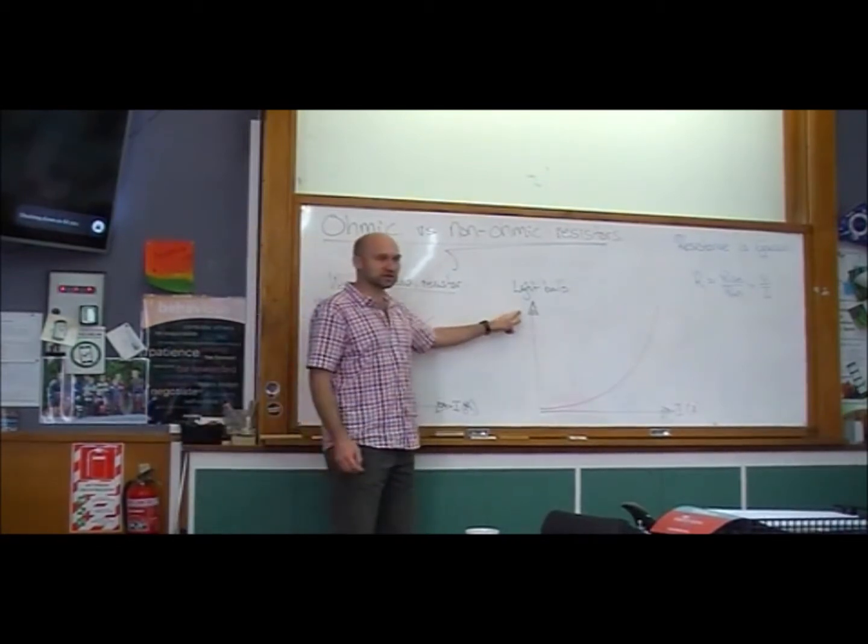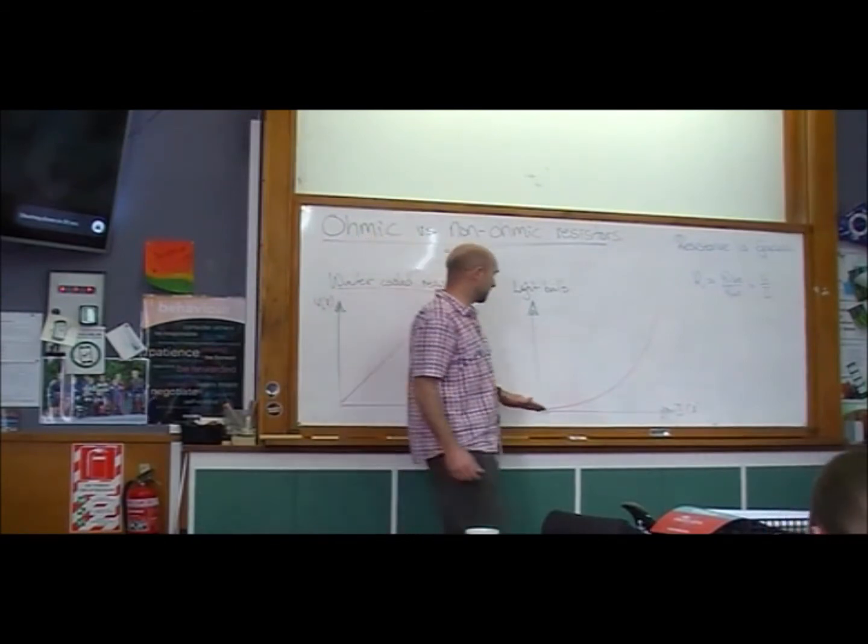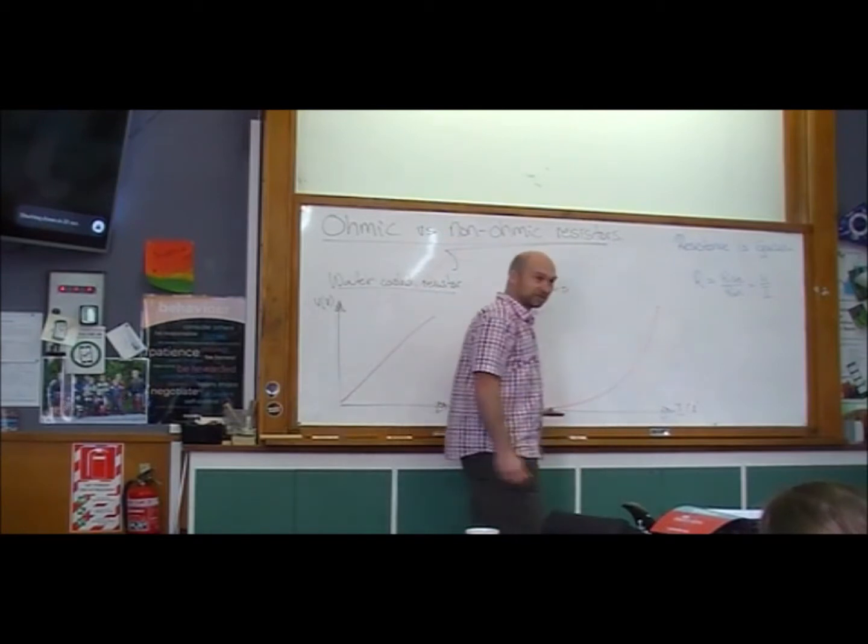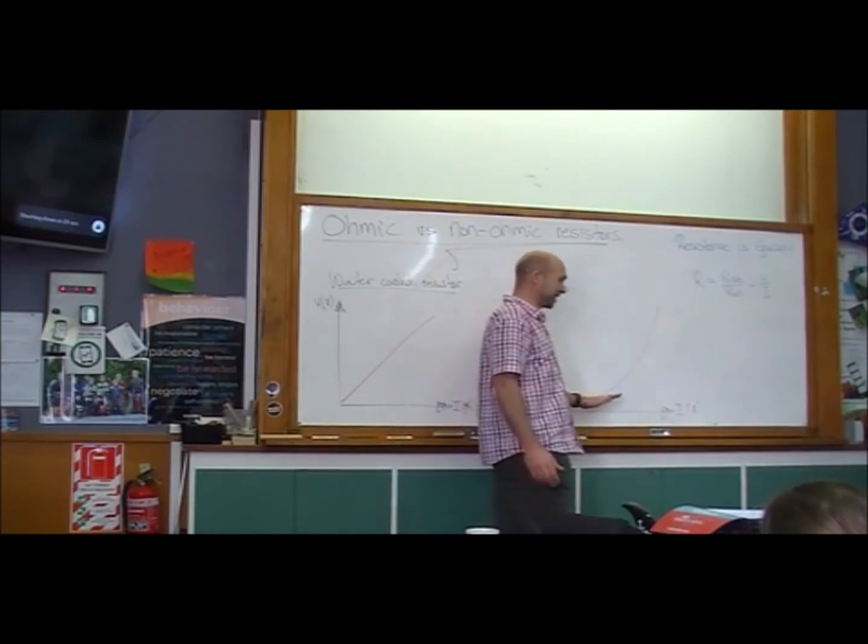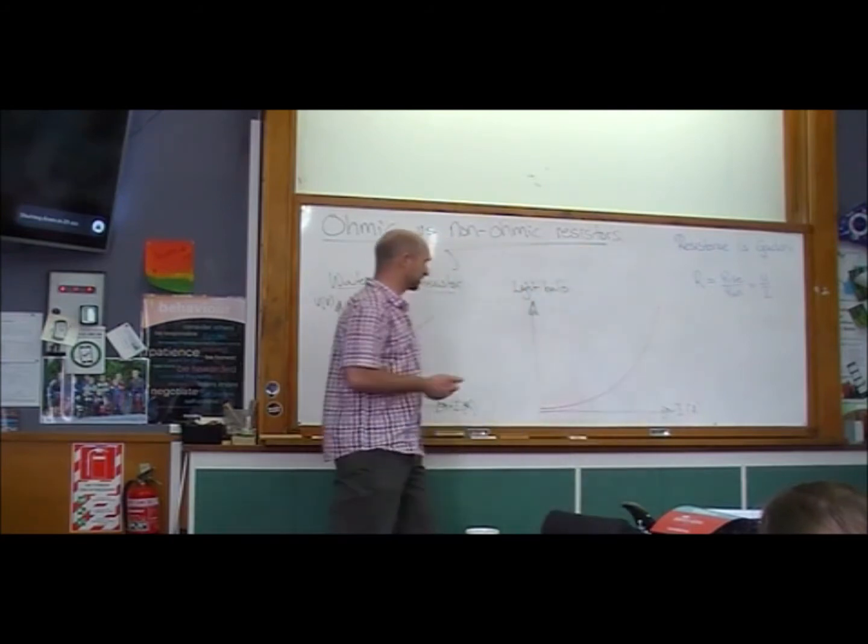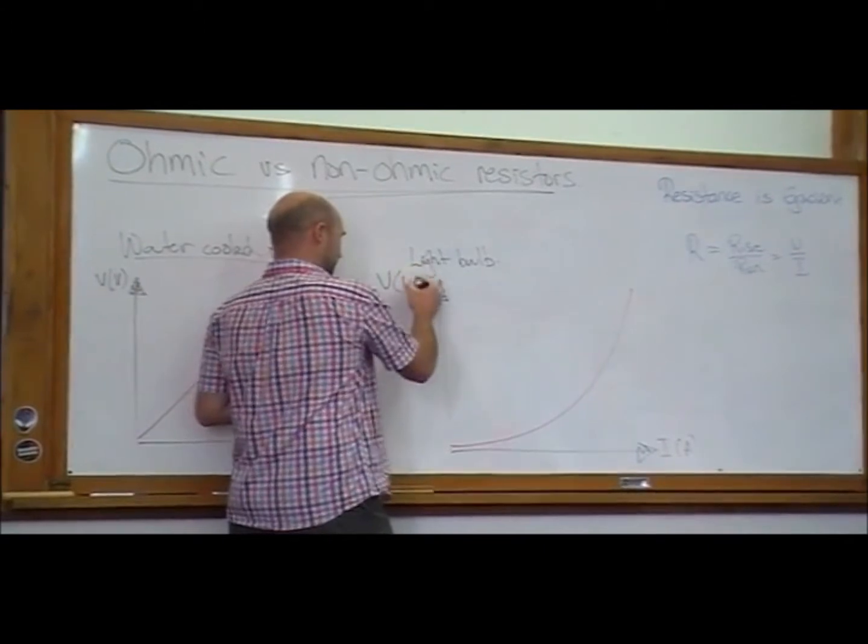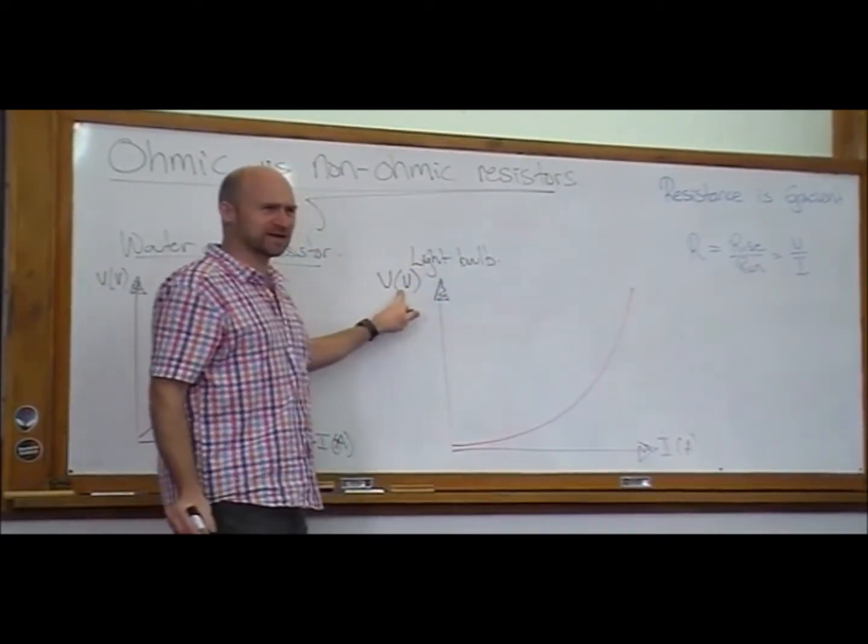And that was really different to when we popped in the light bulb. What we saw with the light bulb was that as the voltage went up, first the current went up fast and then it went up slower and slower and slower. As we increased the voltage, it's hard to talk about when you've got the independent variable on the Y-axis.